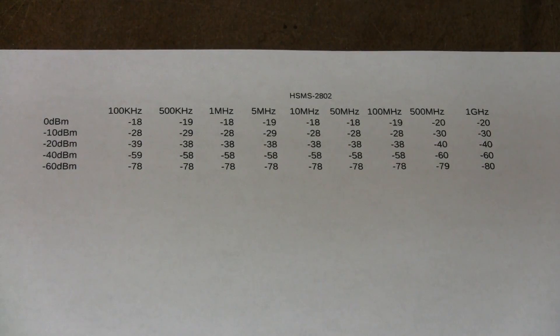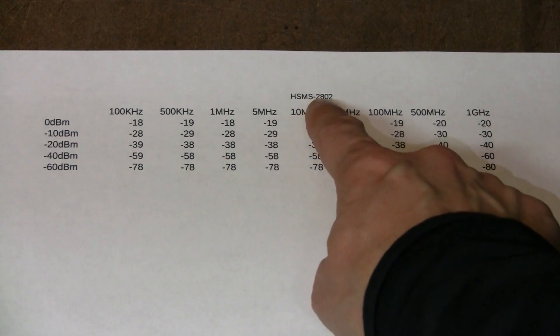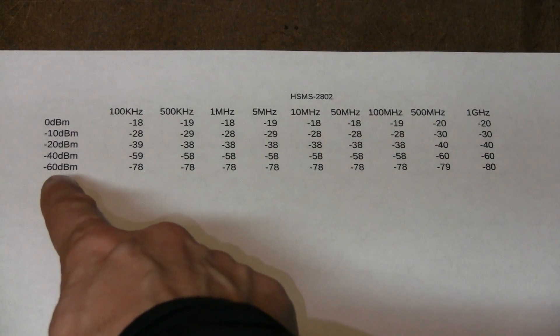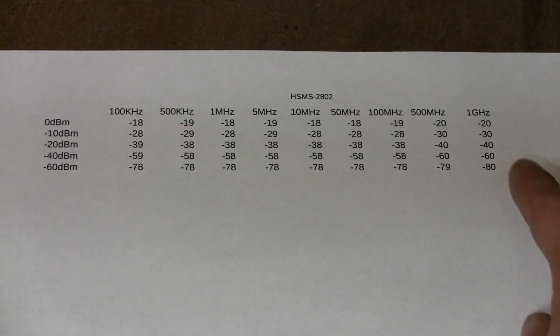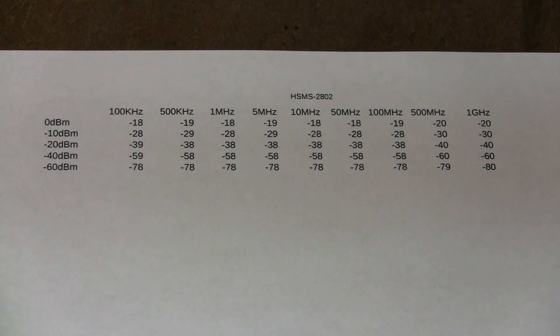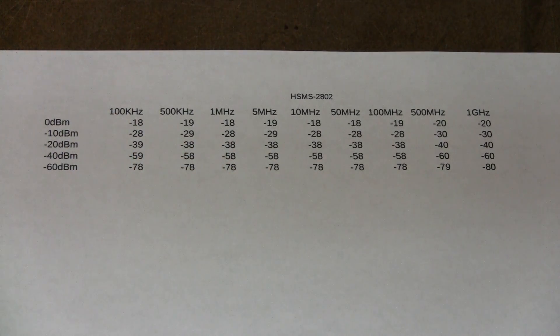Here is the result of my measurements. I am using these diodes now, HSMS 2802. This is the input signal level and these are the output levels at different frequencies. And I had to stop at one gig because this is the limit of my signal generator. And I rounded the numbers to the nearest dB. So the conversion loss is the difference between the input and the output. And as you can see it is quite consistent from about 18 to about 20 dB.